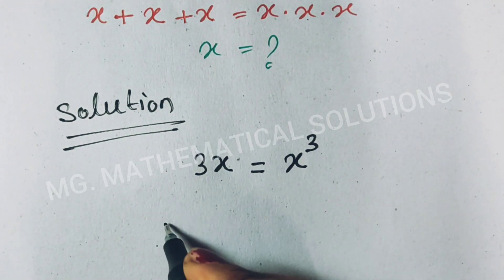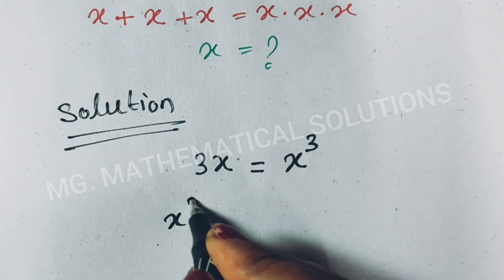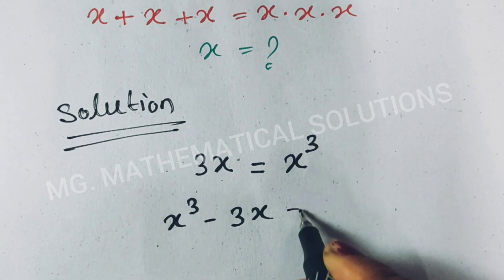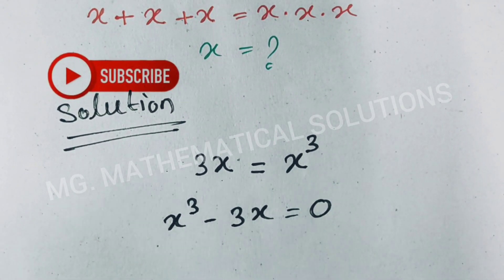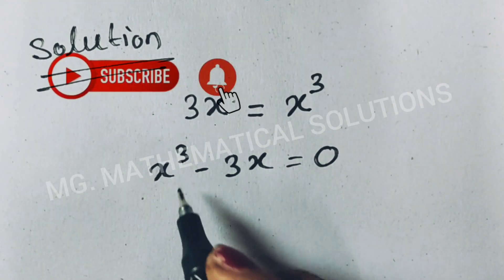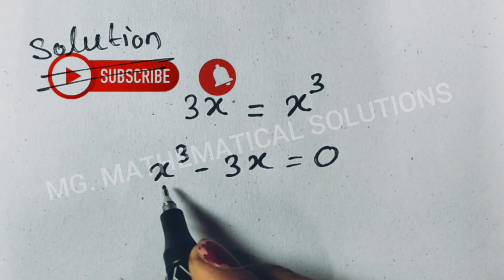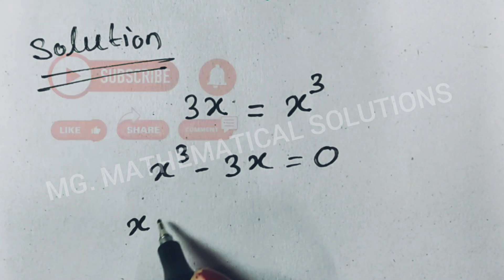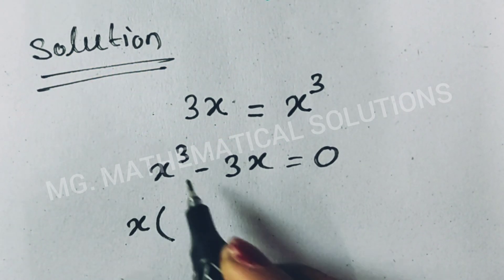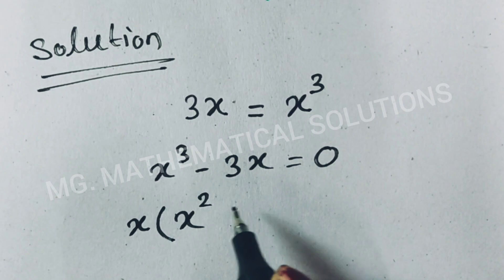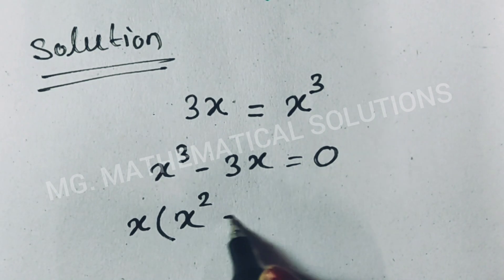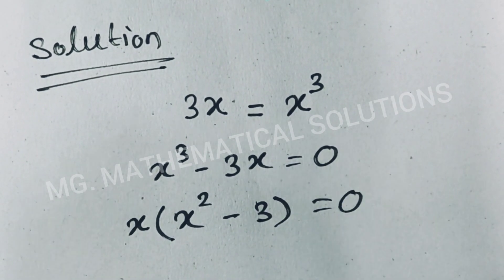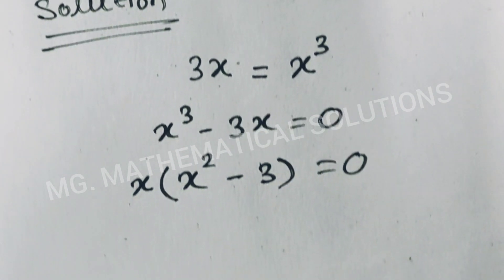So now x cubed minus 3x equals 0. We take out common factor x, giving us x times (x squared minus 3) equals 0.